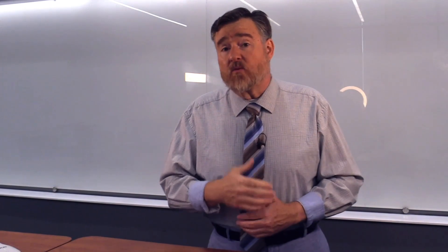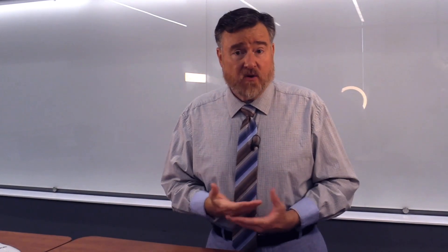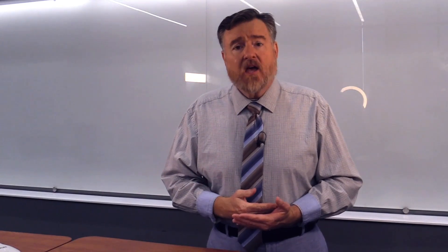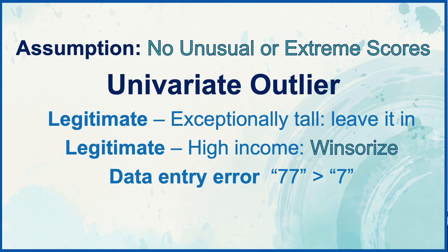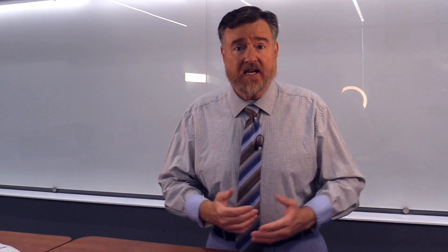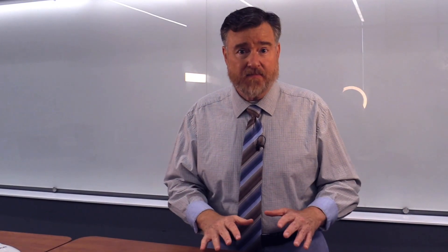Another reason we might have a univariate outlier is because of a data entry error. For example, if you have a scale that runs from 1 to 7 and you find a data entry of 77, it's pretty easy to conclude that that should have been a 7. When you discover data entry errors, just fix them.